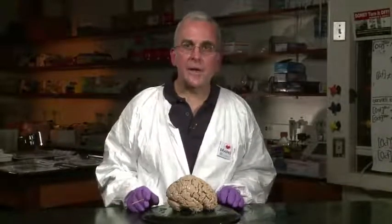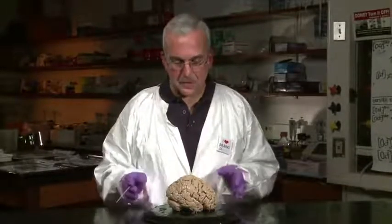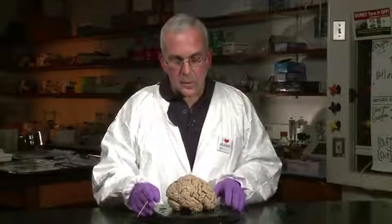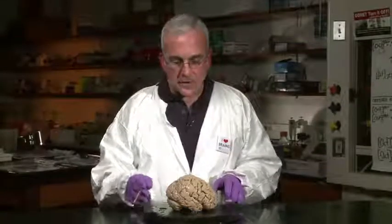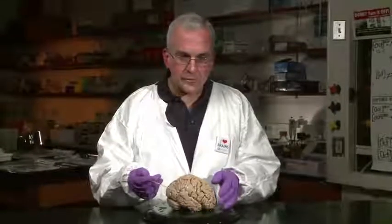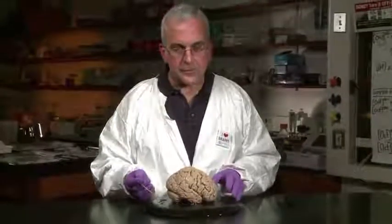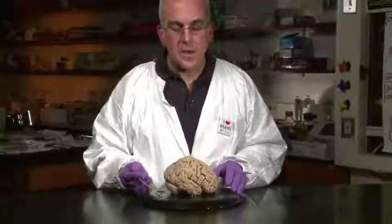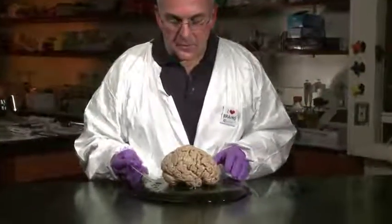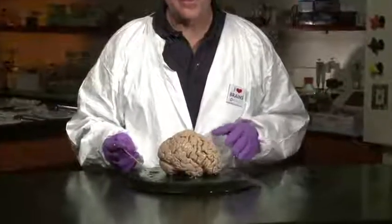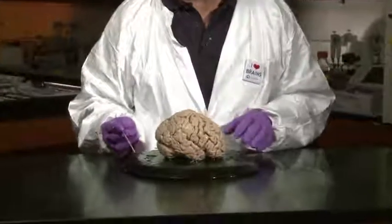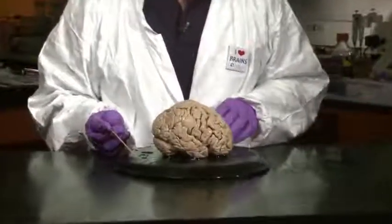Now, let's take a more close look at the lateral surface of the human brain. What we're looking at here is the right hemisphere of a brain specimen. And to begin with, let's find the central sulcus.